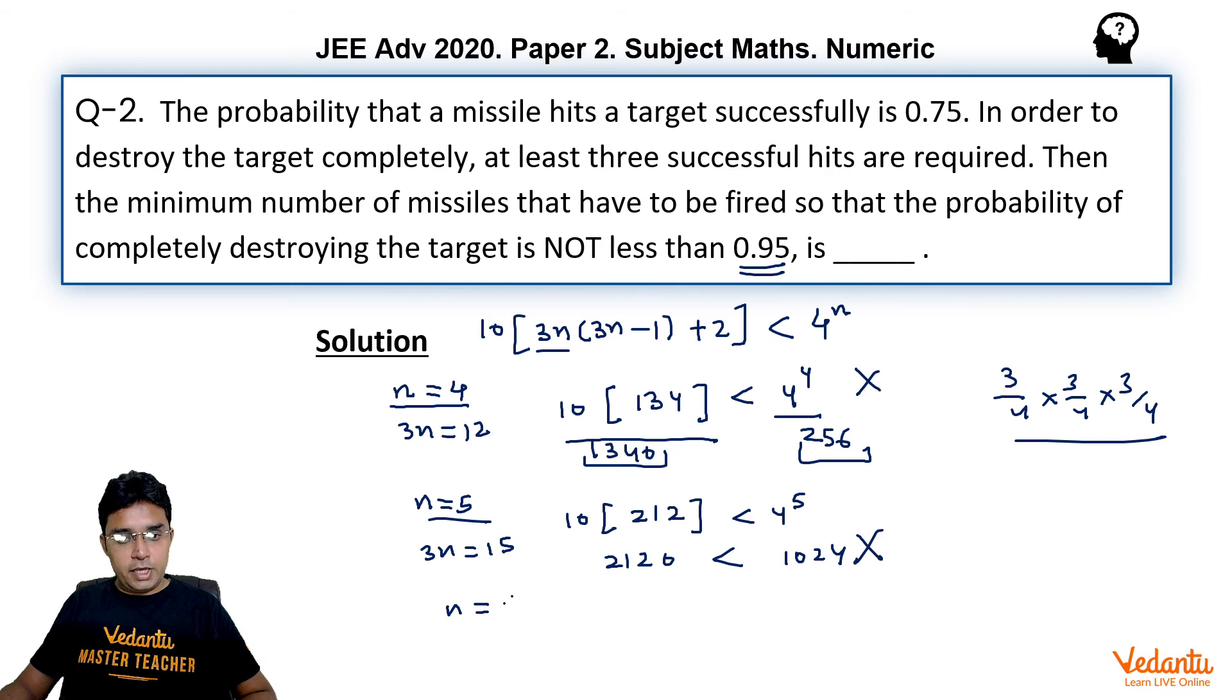Now if we put n is equal to 6, this 3n will be equal to 18, so your left hand side will be 10 into 18 into 17, 18 into 17 is 306, so 306 plus 2 will also be there and less than here we will be writing 4096. So you can see this is definitely matching 3080 on the left hand side and 4096 on the right hand side. So this n is equal to 6 is definitely satisfying this relation.